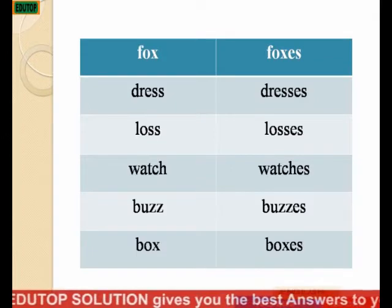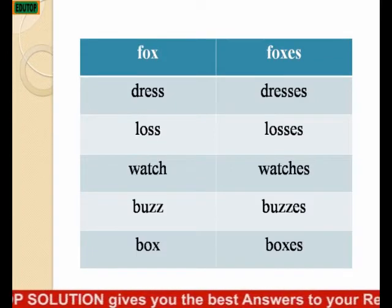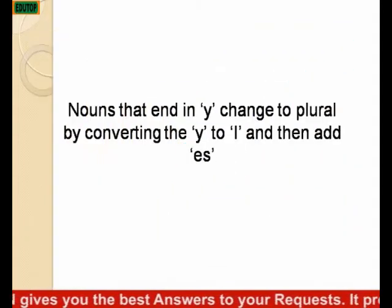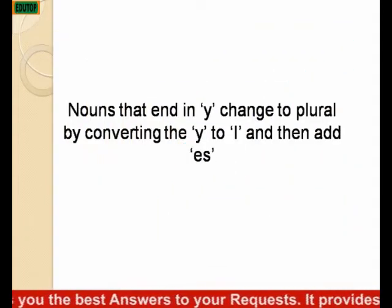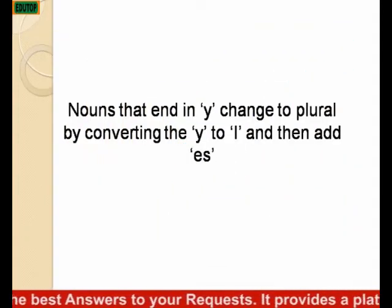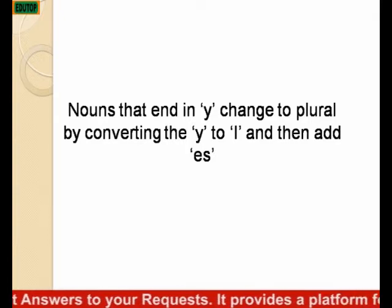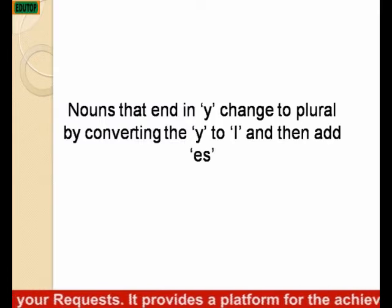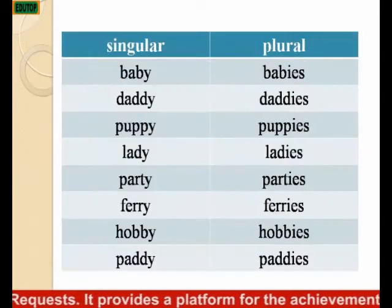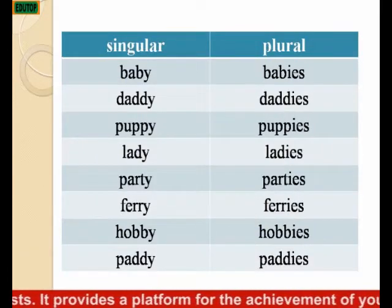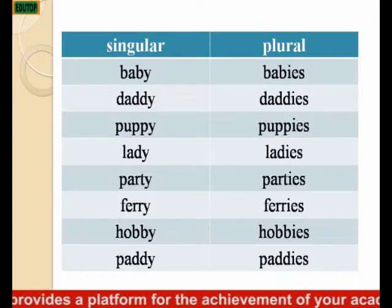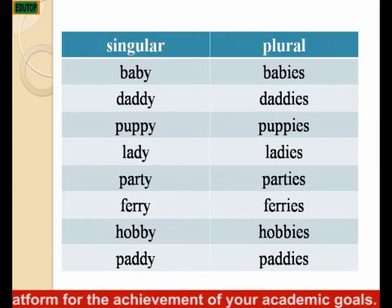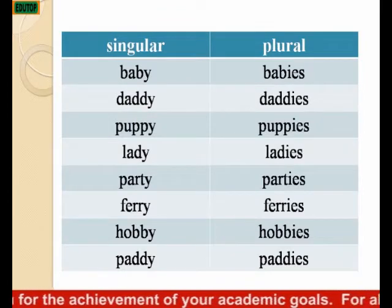So all these are examples of words that take ES to form their plural forms. Nouns that end in Y change to plural by converting the Y to I and then adding ES. Examples: baby becomes babies, daddy becomes daddies, puppy becomes puppies, lady becomes ladies, party becomes parties, fairy becomes fairies.